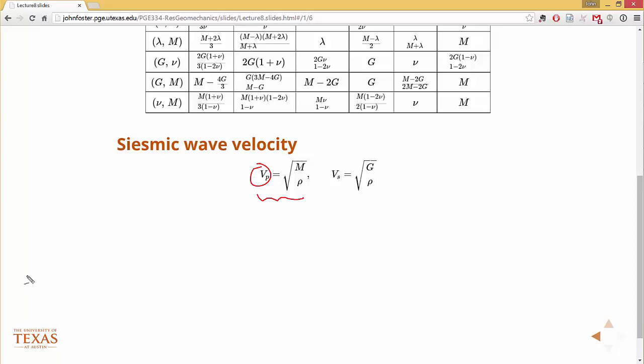So from this, we can go out, we can propagate some waves, we can measure the shear wave velocity, measure the density. That gives us the shear modulus. So then we have one parameter. Then we can measure the P wave velocity. That gives us the seismic modulus, and we have two parameters.